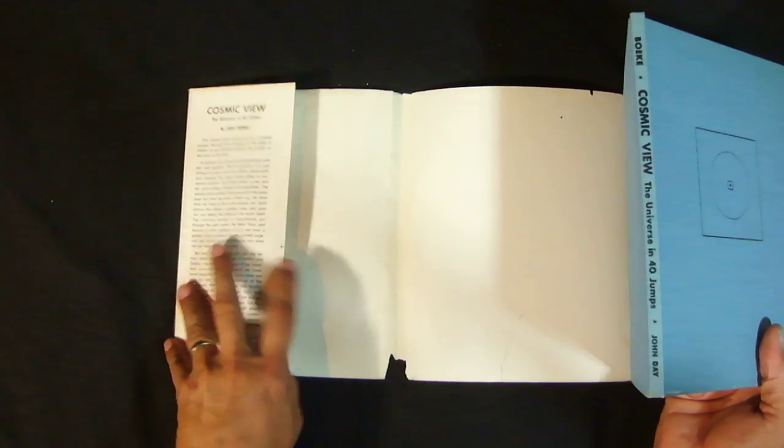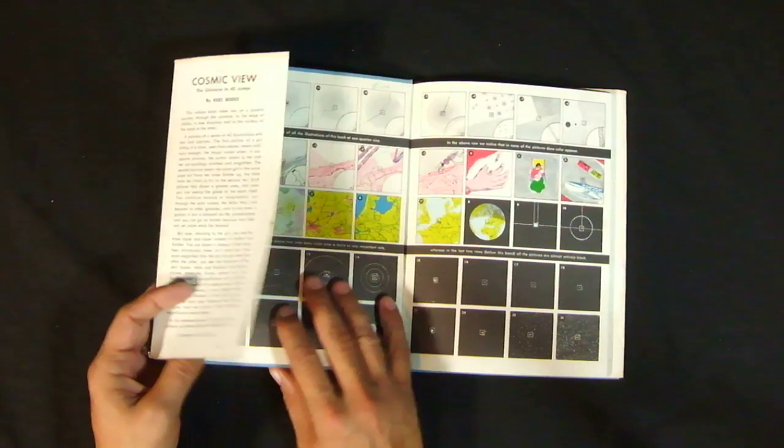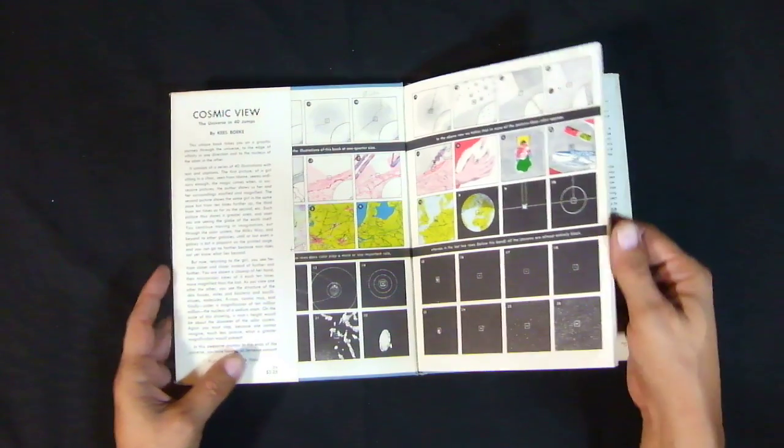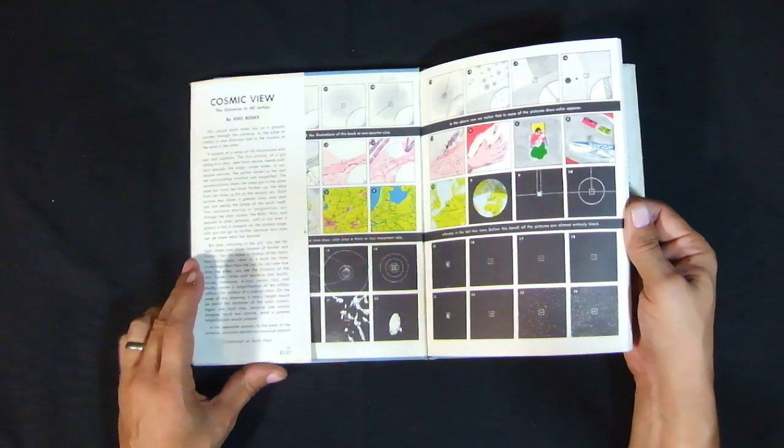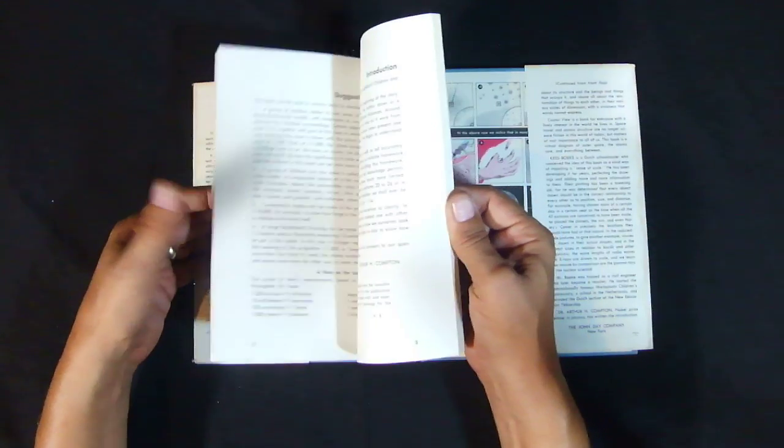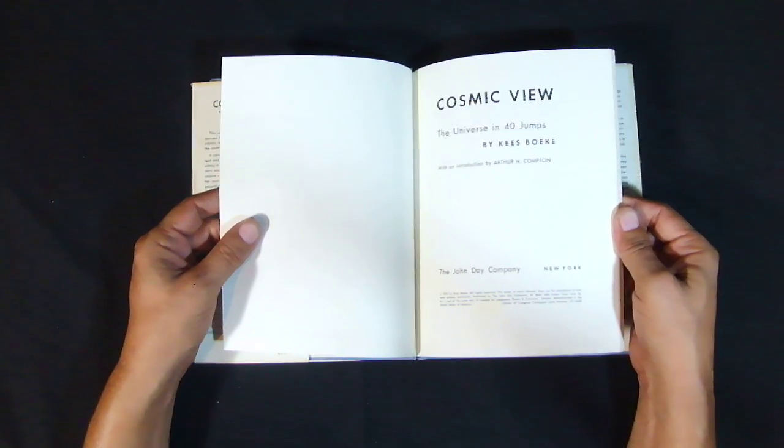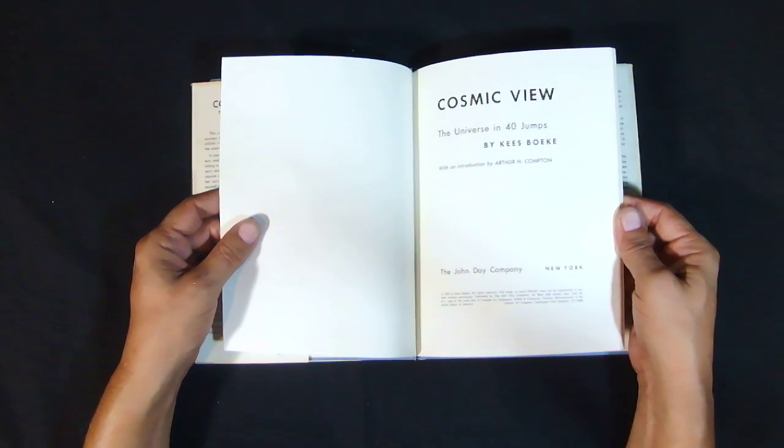There, out of the edge there, but it has the dust jacket. This is what gave Charles and Ray Eames the idea, the inspiration to do the Powers of Ten film years later. This was 1957 that this book was copyrighted, first edition.